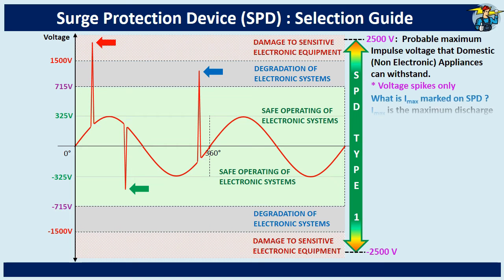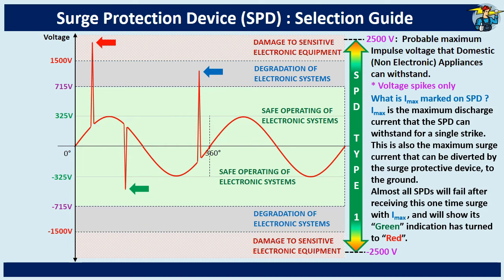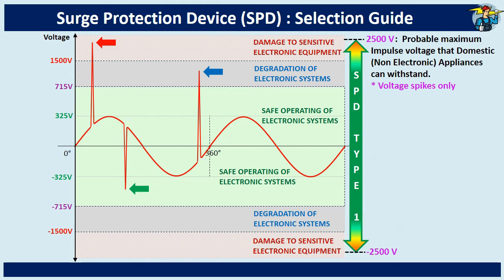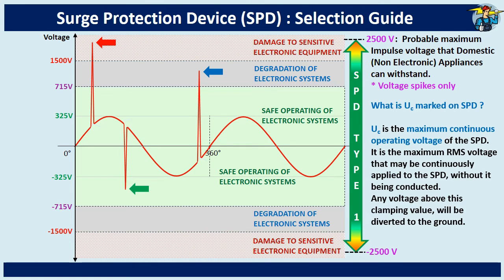What is IMAX marked on an SPD? IMAX is the maximum discharge current that the SPD can withstand for a single strike. This is also the maximum surge current that can be diverted by the surge protective device to the ground. Almost all SPDs will end their lifespan after receiving this one-time surge with IMAX, and will show their green indication has turned to red. What is UC marked on an SPD? UC is the maximum continuous operating voltage of the SPD — the maximum RMS voltage that can be continuously applied to the SPD without it being conducted. Any voltage above this clamping value will be diverted to the ground.